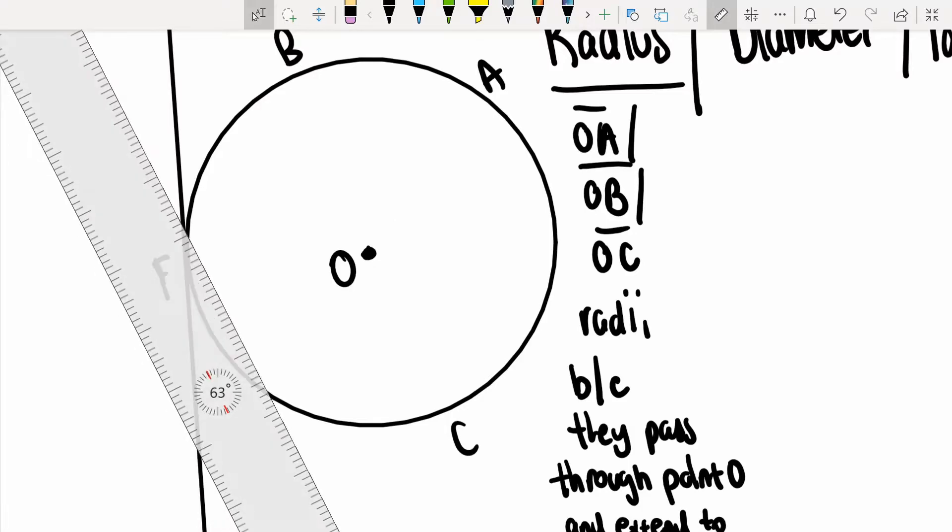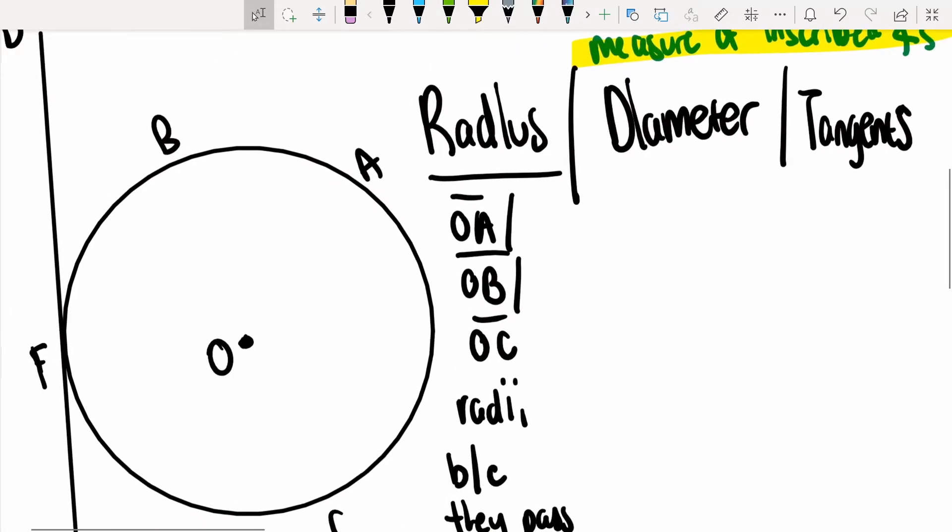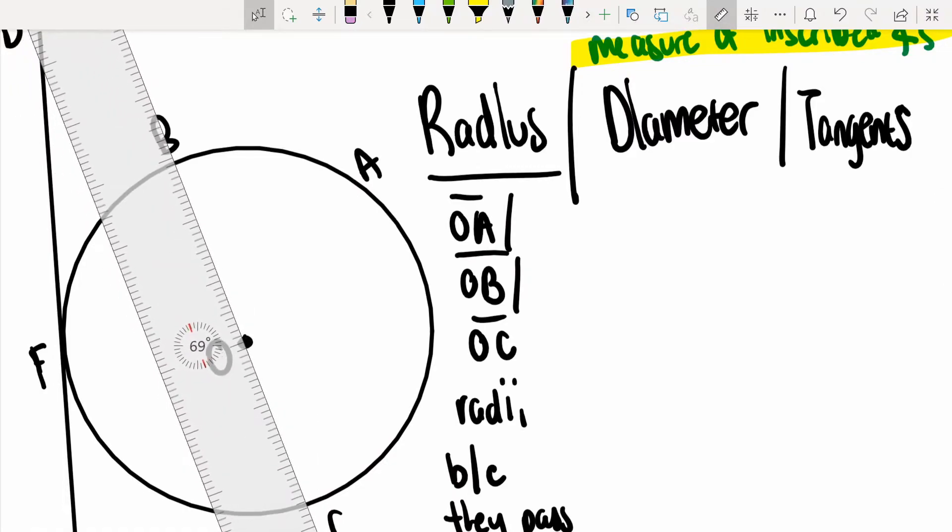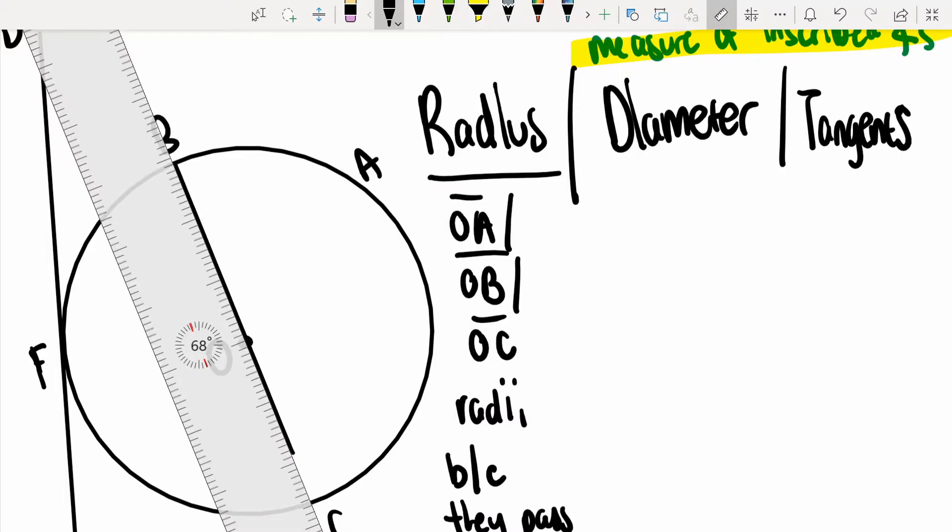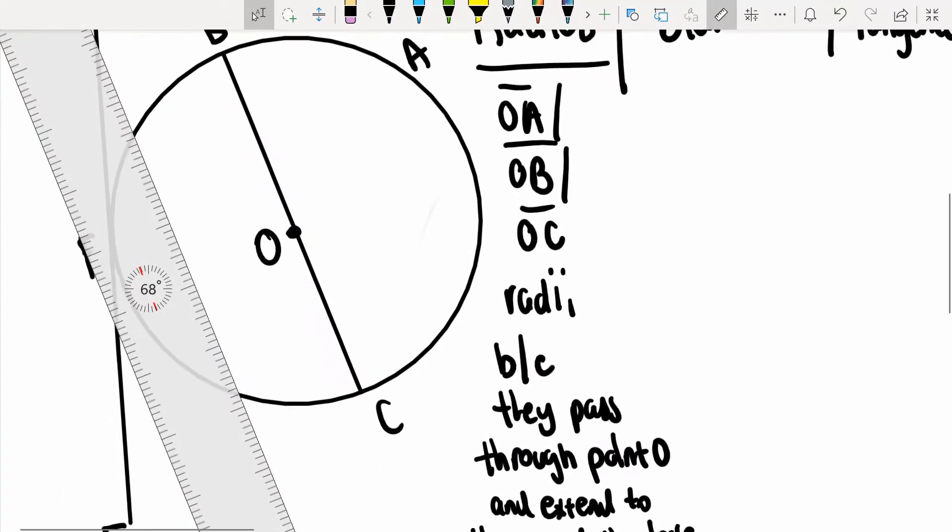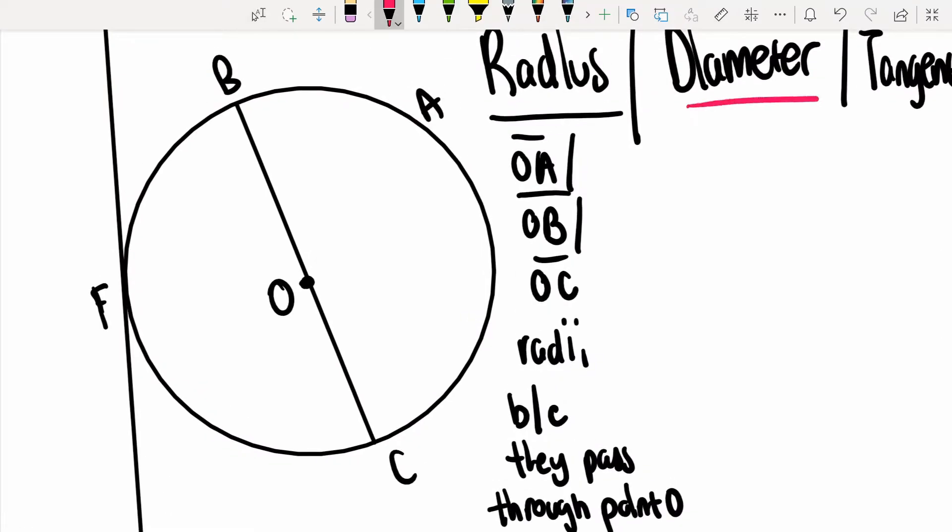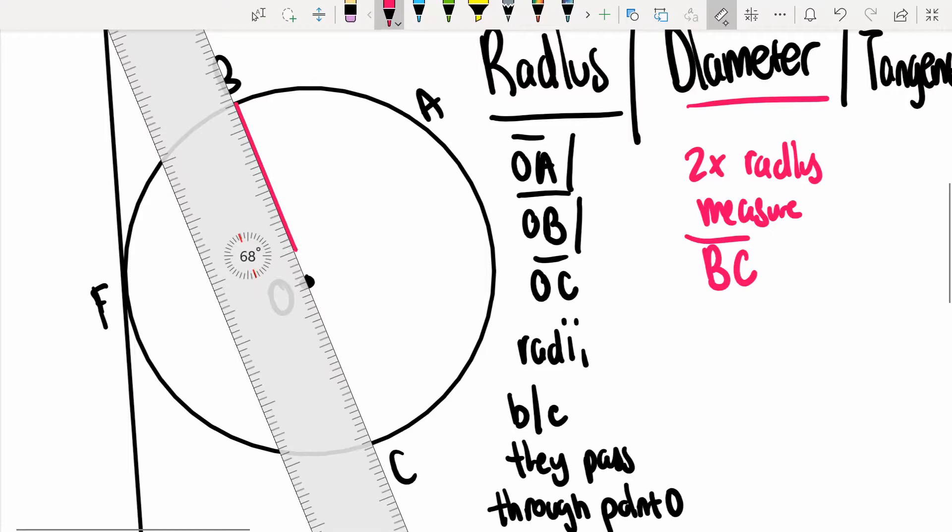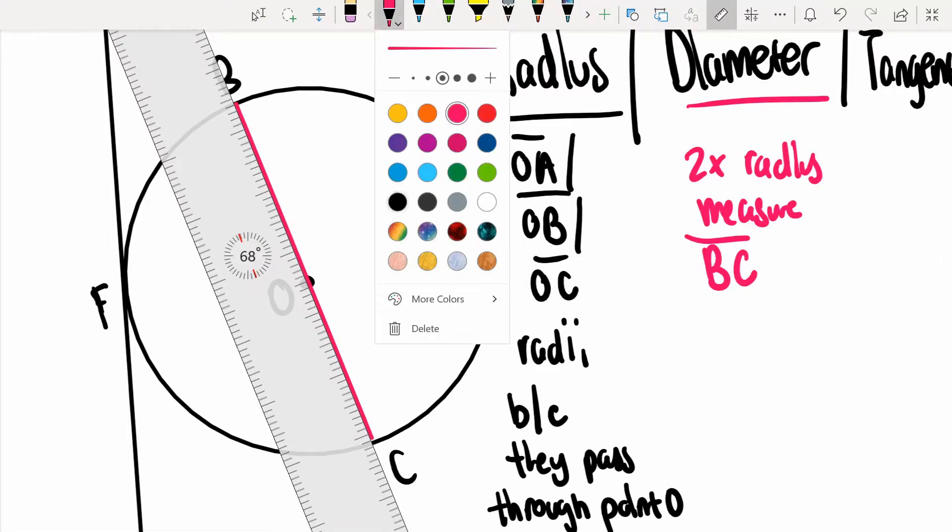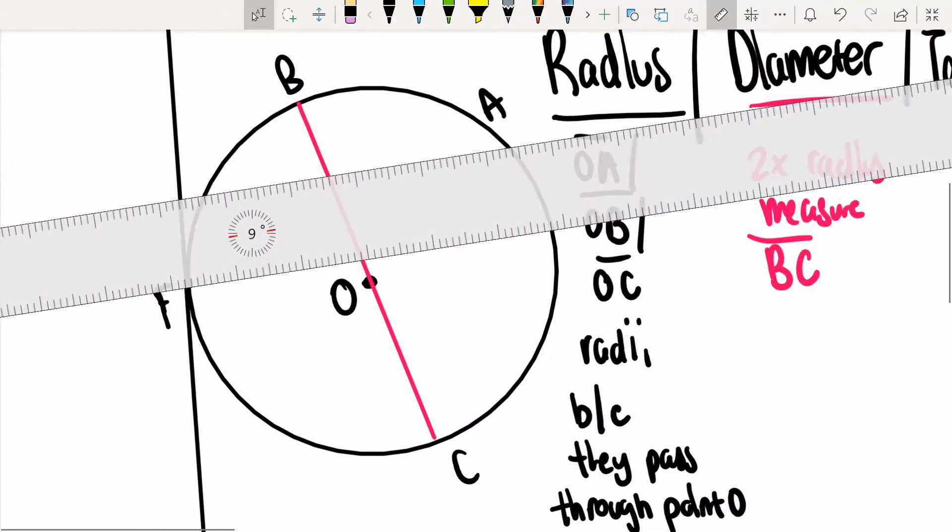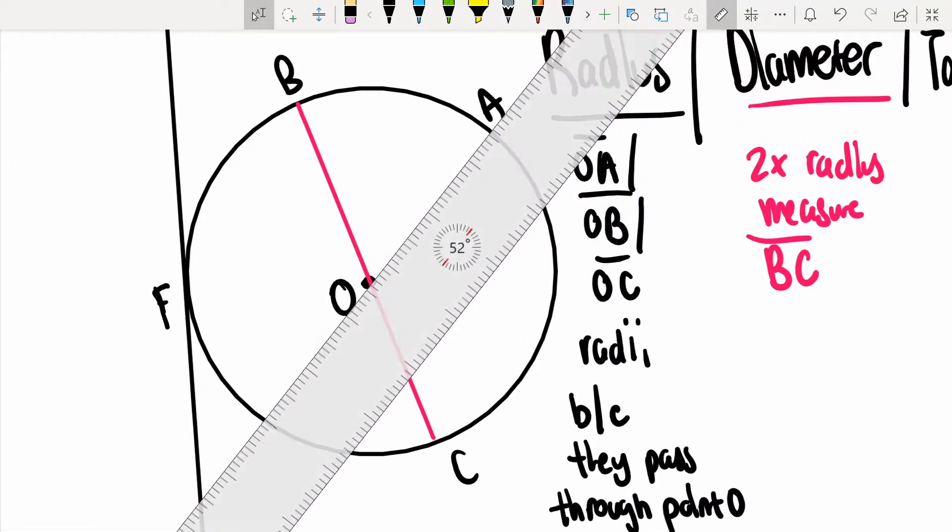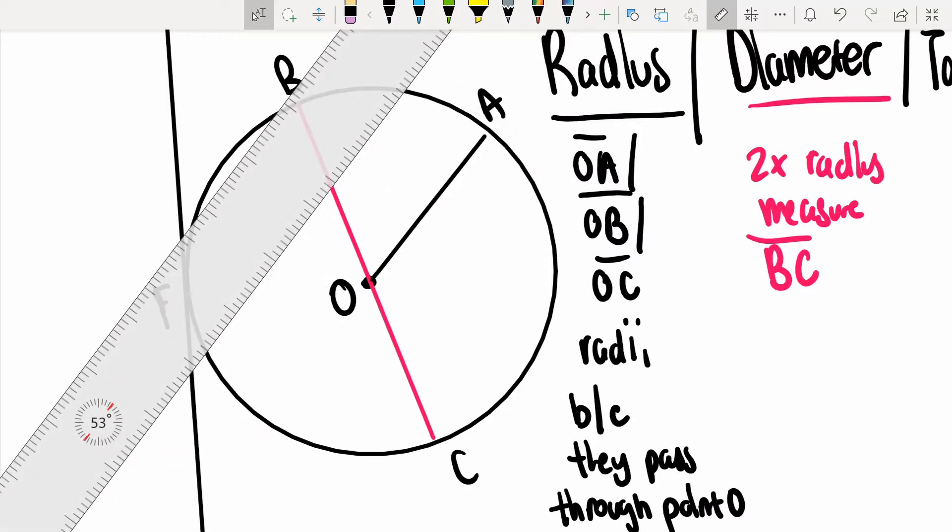Next what we have is diameter. Diameter is just going to be a straight line that goes straight through the center of the circle. Assume that BC is perfectly straight. Diameter is going to be 2 times radius measure and BC is going to be our diameter. The radius can extend anywhere on this circle as long as it goes through the center and extends outward to the circle.